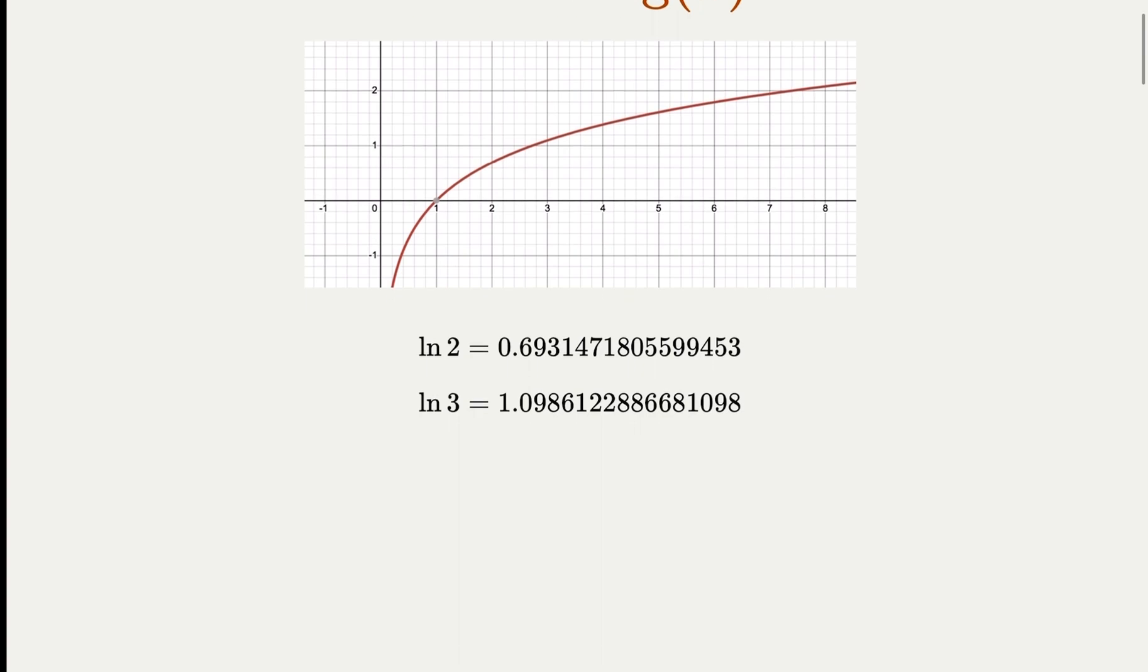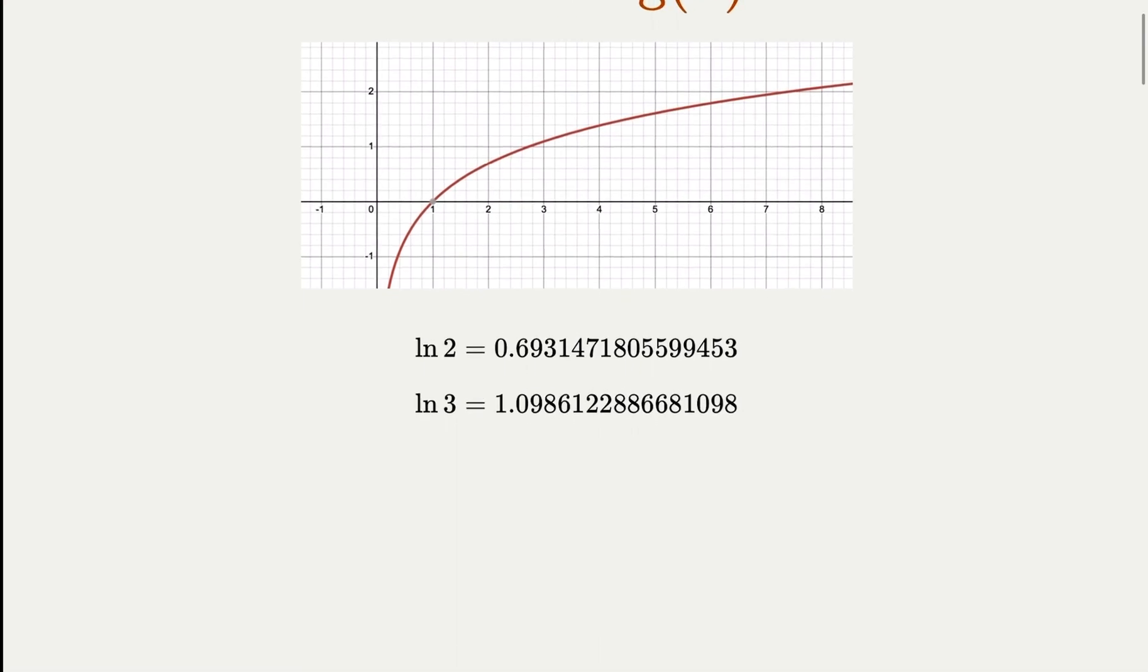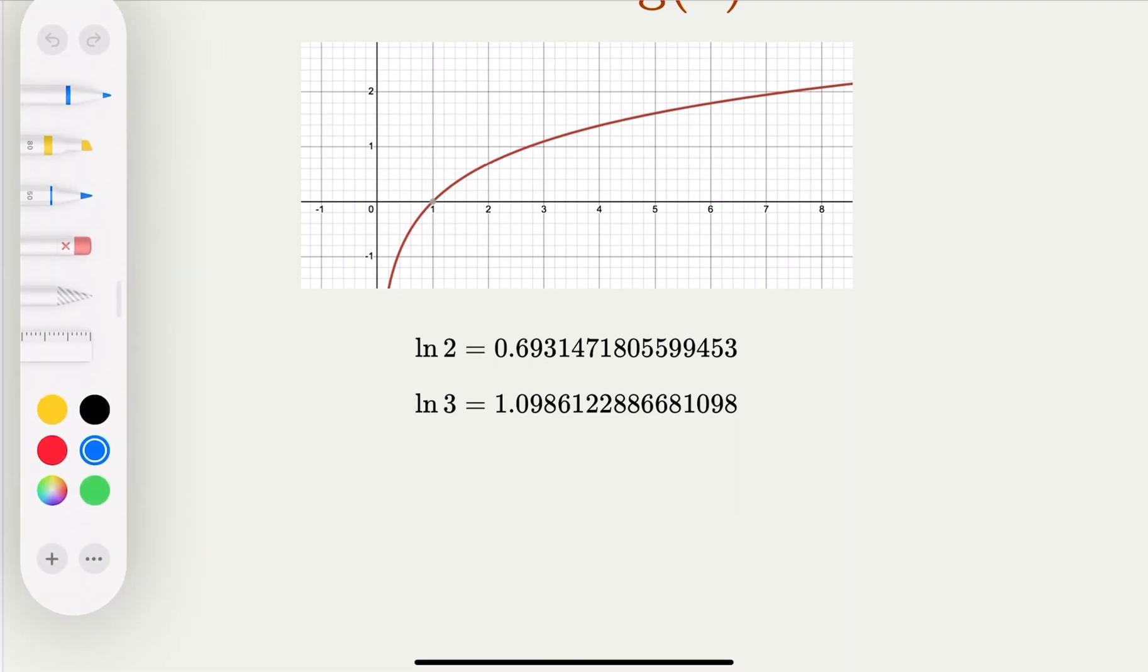Of course, it's good to review what logarithm function looks like. This is the graph. So when x is equal to 1, it's equal to 0. This is the zero point here. And then when x is smaller than 1 is negative, it's bigger than 1 is positive, and it increases gradually.